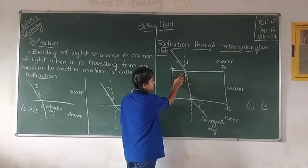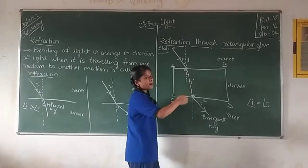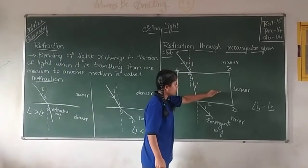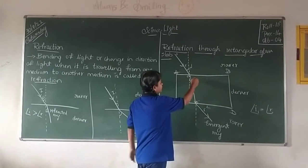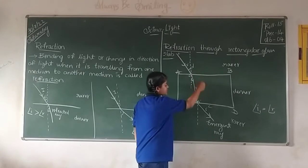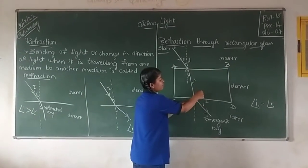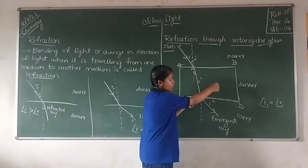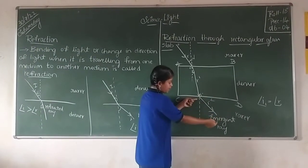So when the light travels from a rarer medium to the denser medium, the refracted ray moves close to the normal. In the same way it comes here, and when the light is passing from a denser medium, that is glass, to again rarer medium,